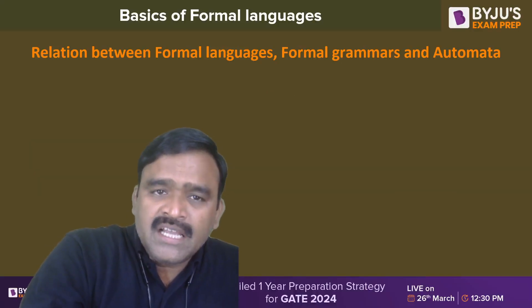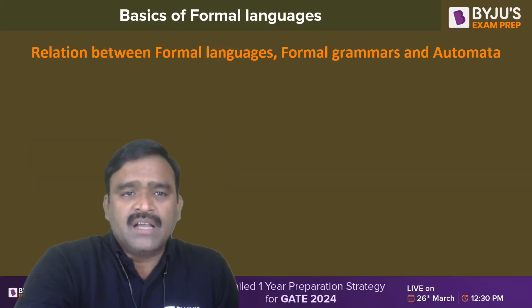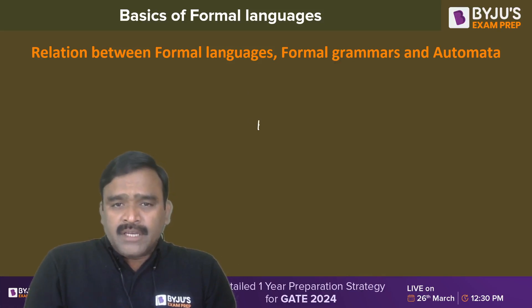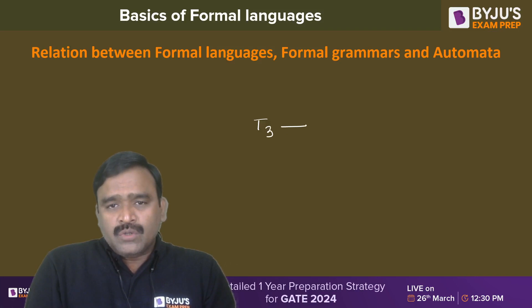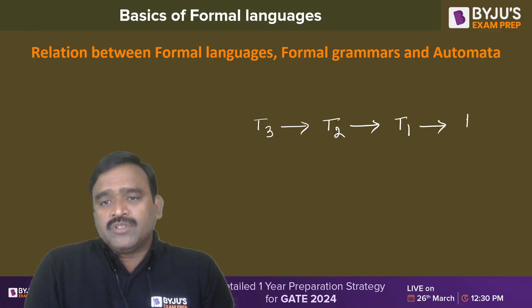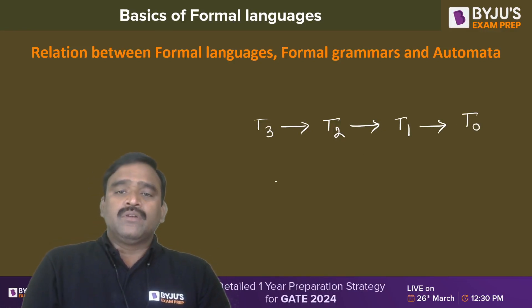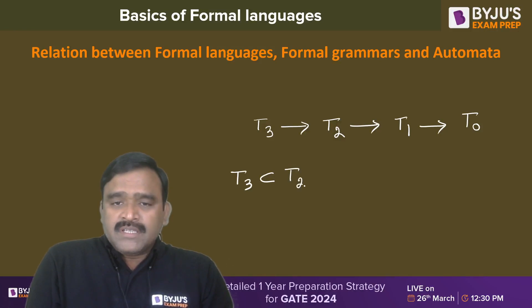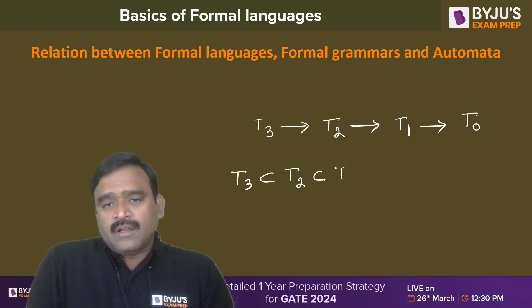Looking at the relation between formal languages: every Type 3 language is also a Type 2 language, every Type 2 is also Type 1, and every Type 1 is also Type 0. So Type 3 is a proper subset of Type 2, which is a subset of Type 1, which is a subset of Type 0.